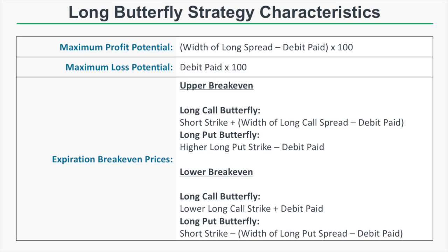Let's talk about the strategy characteristics of the long butterfly. The maximum profit potential equals the width of the long spread minus the debit paid, times 100. The maximum loss potential is the debit paid times 100. The upper break-even price differs for call and put butterflies. For a long call butterfly, the upper break-even price is the short strike plus the width of the long call spread minus the debit paid — essentially the short strike plus the max profit of the long spread.